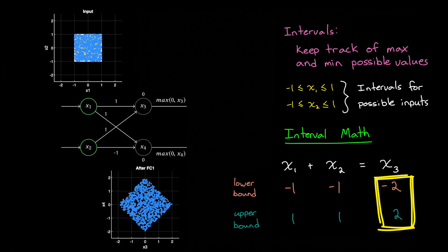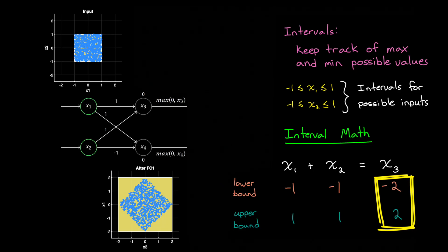So this means that after the first fully connected layer, we can see that x3 could be between minus 2 and 2, we're just adding the two inputs together. And x4 has the same interval since we're just subtracting the two inputs. Therefore, the bounding box using intervals looks like this. And the thing to note here is that with intervals, we're overestimating the true feasible set, since we're just looking at the max and mins for each variable. But we're using mathematics that are much easier to calculate.